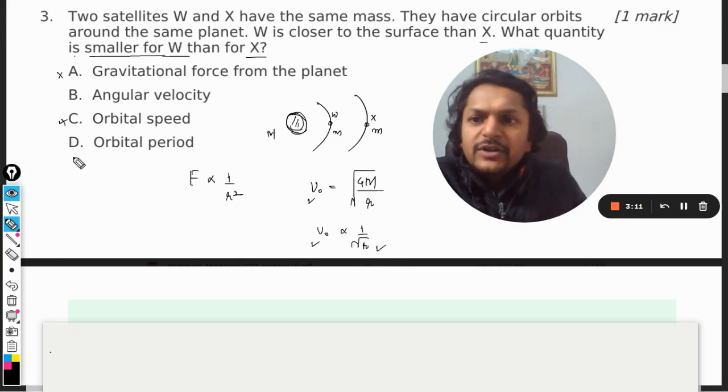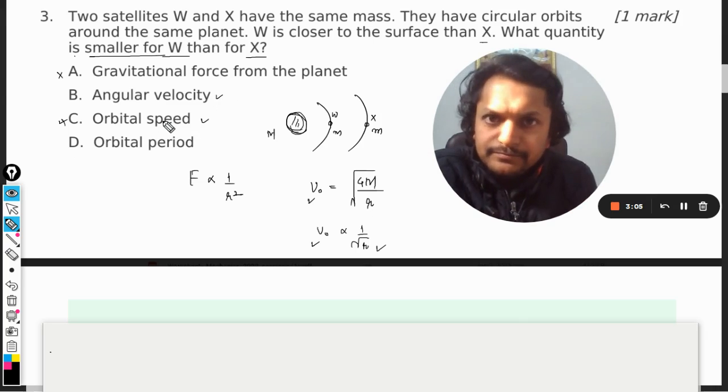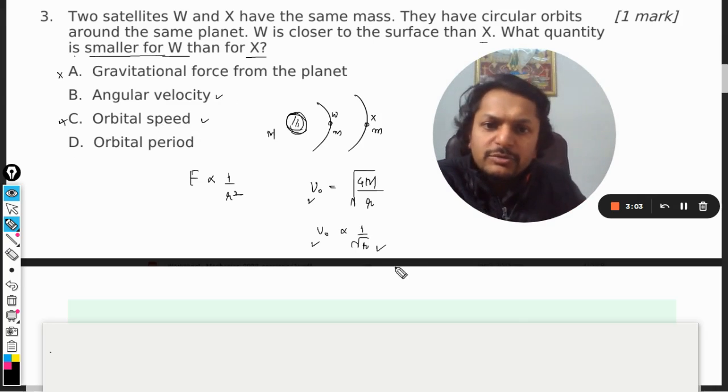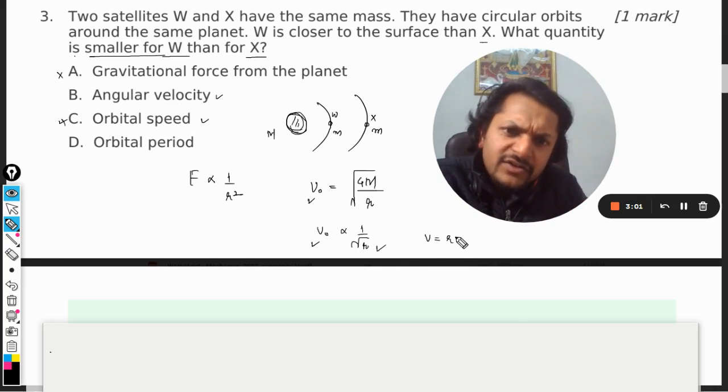So orbital speed will also be more. So if orbital speed is going to be more, angular velocity will also be more. So angular velocity has to be more. So there is the formula like v is equal to r omega.